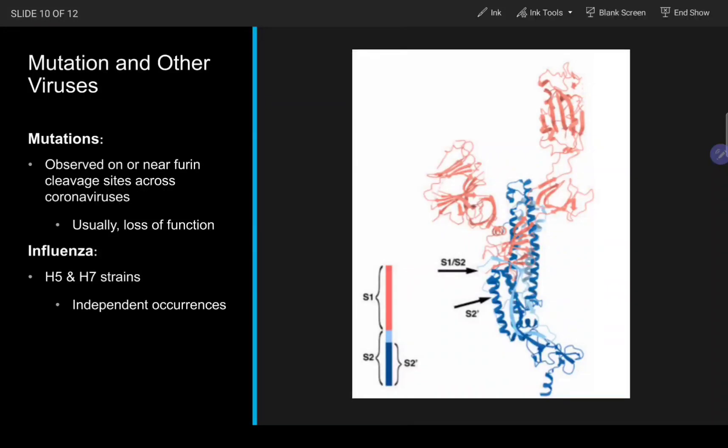Mutations have been observed on or near the furin cleavage site with SARS-CoV-2 and many other coronaviruses. The author cites several examples of mutations that lead to loss of function of the furin cleavage site, but I think it's important to note that there is a significant difference in mutations causing the loss of motif function compared to an entire motif insertion.